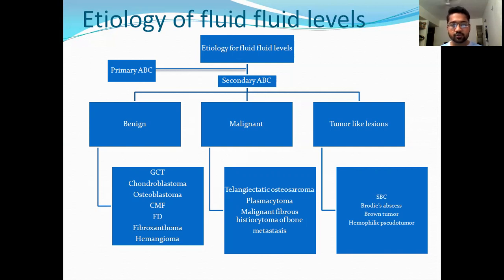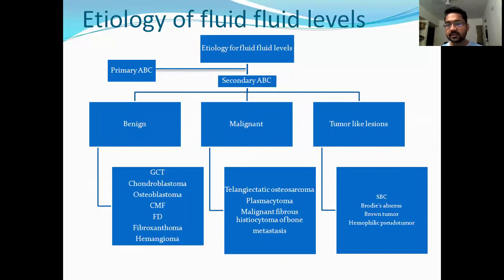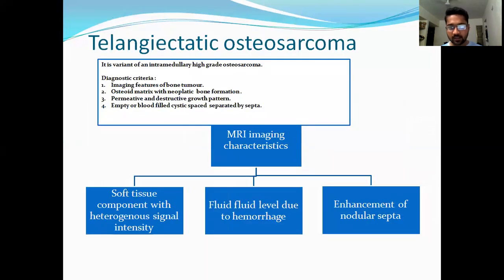Under the category of benign, we study: giant cell tumor, chondroblastoma, osteoblastoma, chondromyxoid fibroma, fibrous dysplasia, and fibroblastoma. In the malignant category: telangiectatic osteosarcoma, plasmacytoma, malignant fibrous histiocytoma, and metastasis. Under tumor-like lesions: simple bone cyst, brown tumor, and hemophilic pseudotumor.